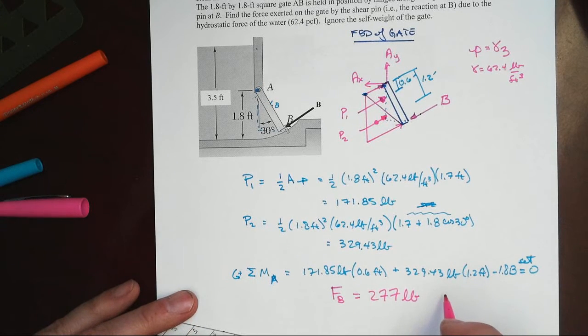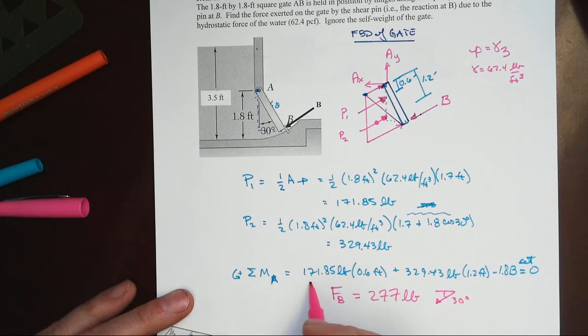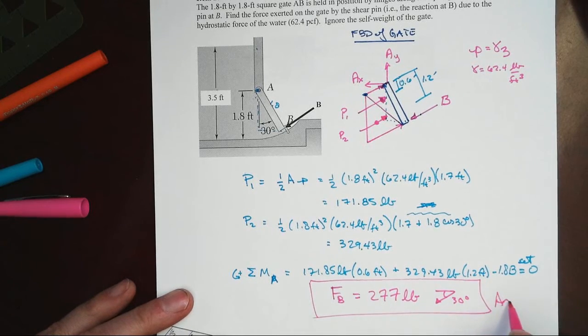And if you want to be really precise, then of course that's acting downwards from the horizontal at 30 degrees. And there's your answer.